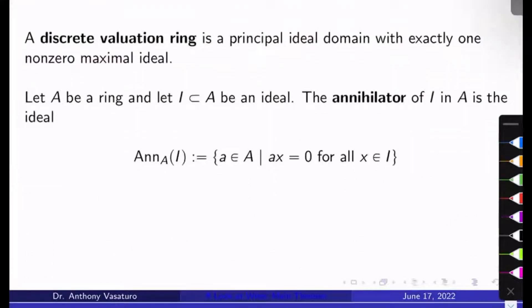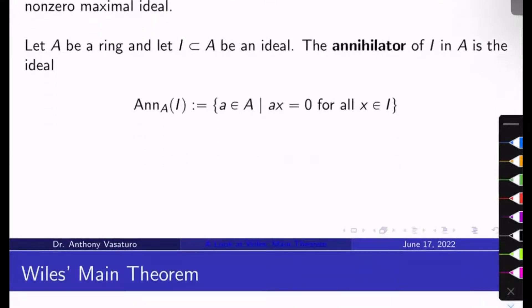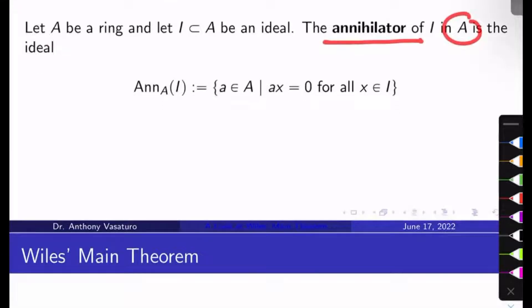A bit more commutative algebra. A discrete valuation ring—there are many equivalent definitions here—I'll give the simplest one. It's a principal ideal domain, so every ideal is generated by one element with exactly one non-zero maximal ideal. Finally, let A be a ring and I in A be an ideal. The annihilator of I in A is written Ann_A(I), and it's the set of everything in A that kills everything in I. It's the set of all elements a in A such that ax equals zero for all x in I.